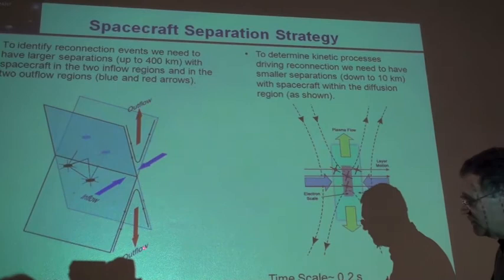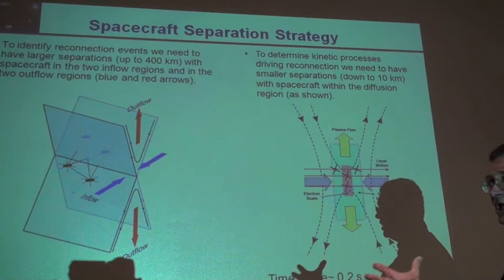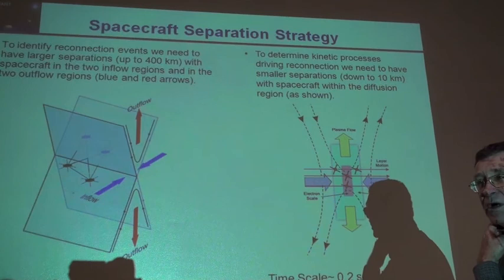This is in regions what we call the ion scale, so we can look at the mass flow. The ions carry the mass, mass flow in and out of the reconnection regions, and so we'll expand the constellation of four satellites to look at this topology on both large and small scales.